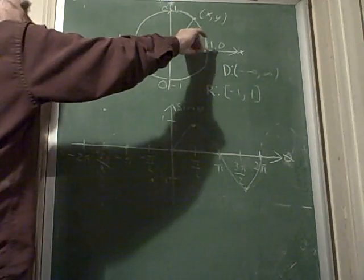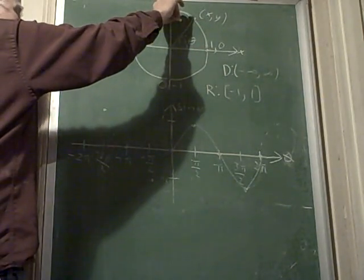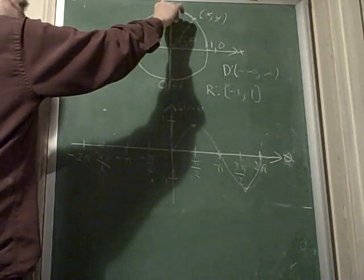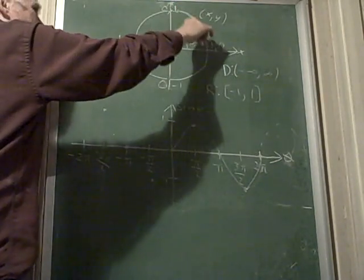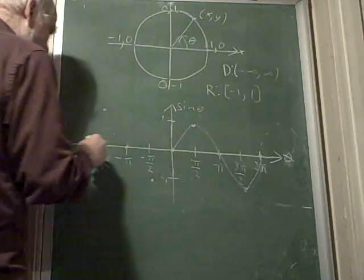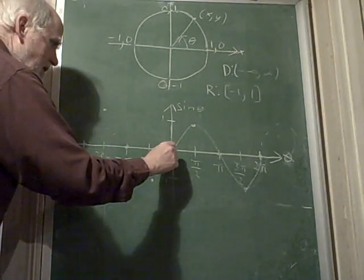And then when it moves from, or all the way around, from negative 3 pi over 2, that's 270, all the way to negative 2 pi, it goes back to 0. So it looks like this.